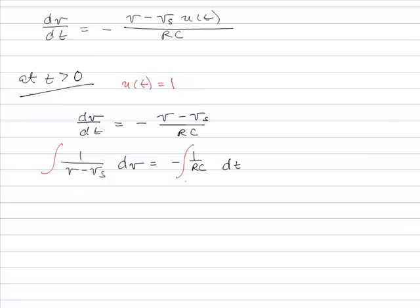Integrate. My time is zero going to some miscellaneous t. My voltage is V0 going to some miscellaneous V. And then I've got natural log of V minus Vs minus natural log of V0 minus Vs equal to minus t over RC.